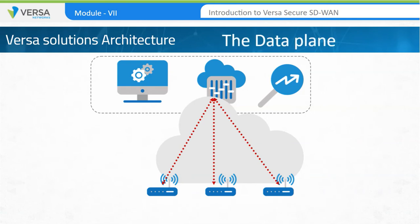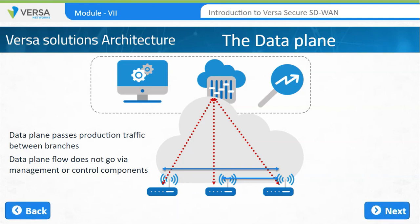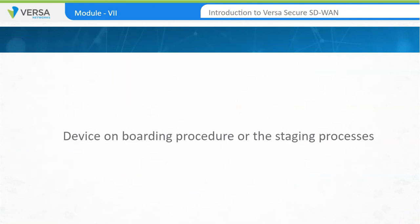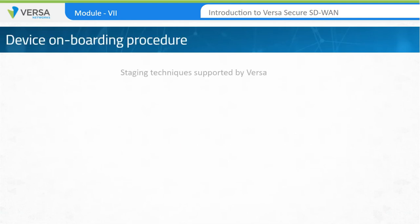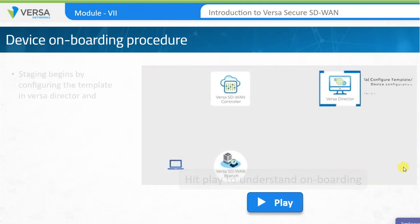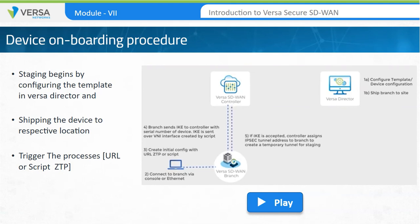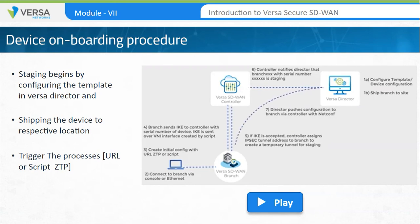The Data Plane is the third part of the Versa architecture. The Data Plane passes production traffic between branches and doesn't involve the Control Plane or Management Plane components. The Data Plane consists of secure tunnels between branches to forward data. Every branch will have to go through a device onboarding procedure, which is also called the staging process. Versa supports various staging techniques, including URL ZTP, Global ZTP, and Manual Python script-based provisioning. The device staging process happens over a secured IPSec channel between the branch and the controller in the head-end. Once IKE authentication is verified on the controller, the Versa Controller notifies Versa Director that the branch is beginning the staging process. Versa Director establishes a NETCONF session with the branch over the secured staging tunnel and pushes the configuration to the device.